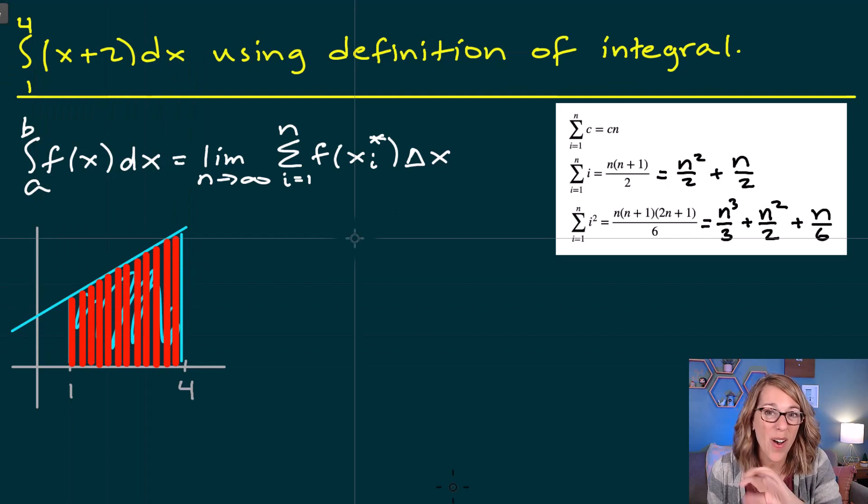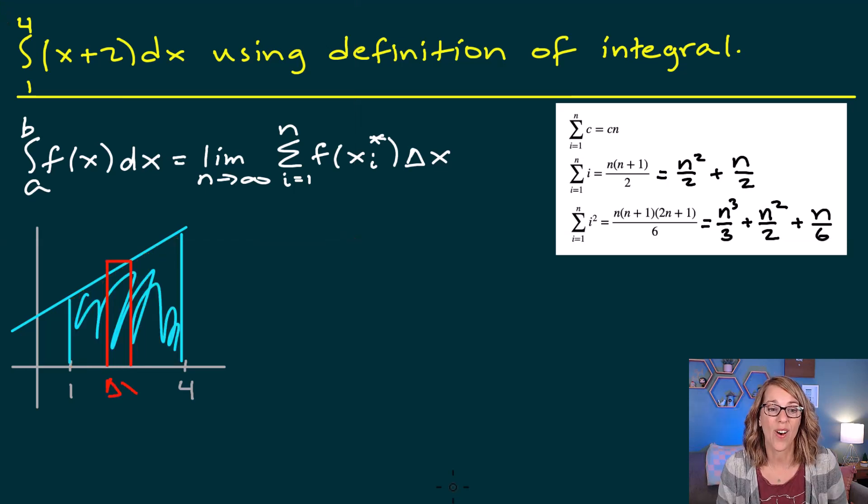Instead of worrying about all of these rectangles, the formula allows me to focus on one sample rectangle, and that's the i-th rectangle. The width of this rectangle and all of the rectangles is delta x, and delta x is going to be the entire length of the interval divided into n rectangles. So in general, that's b minus a divided by n.